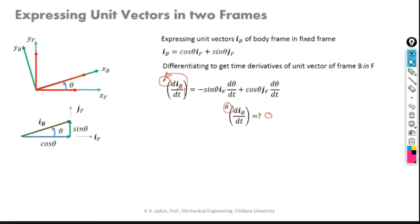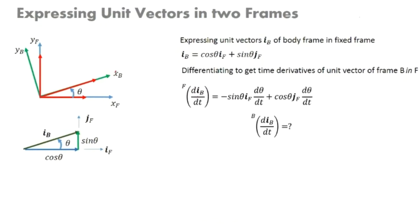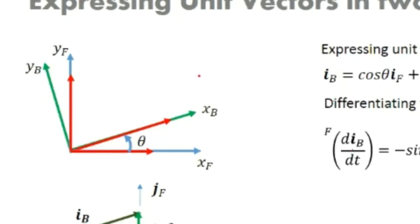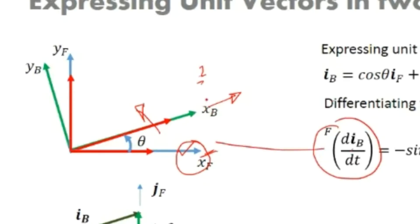This is all about differentiating in the same frame — we are associated with the B frame and we are differentiating that vector in the F frame. If there is a vector IB, if the B frame is the body-fixed frame and it is static and doesn't move, then d IB by dt in F frame may be zero because IB is not changing even with reference to the fixed frame — IB is fixed.